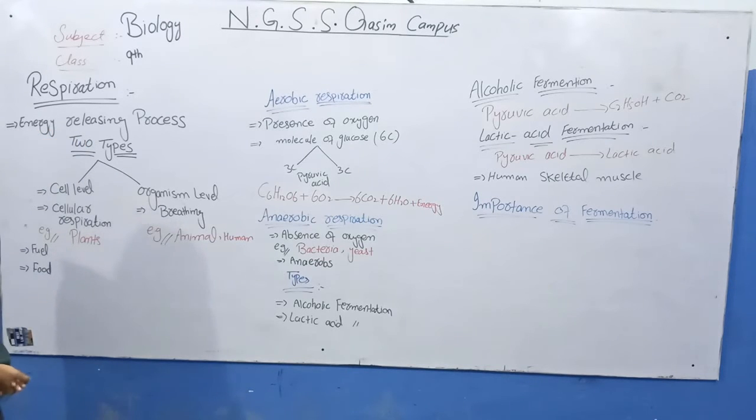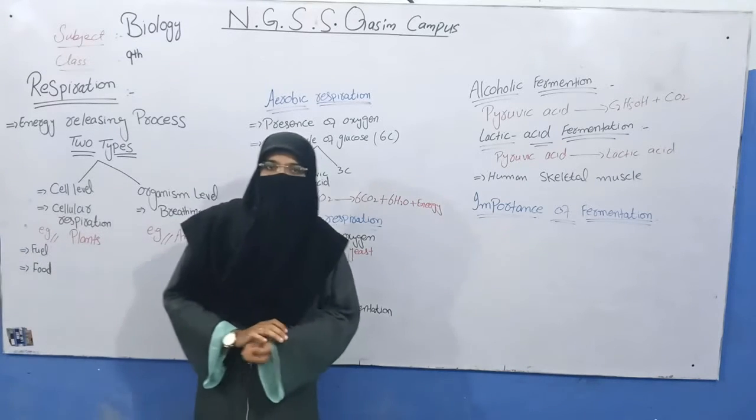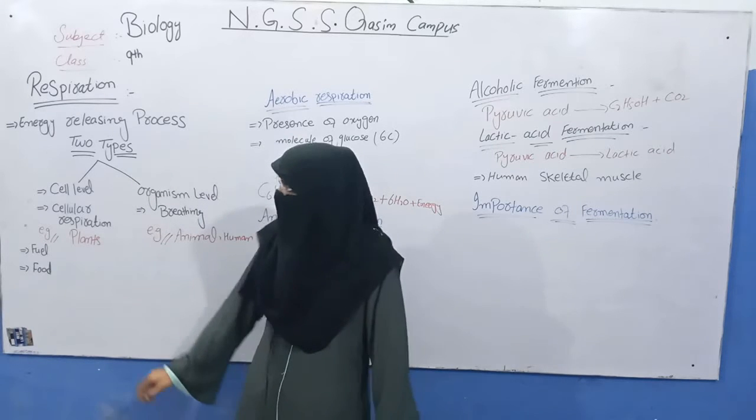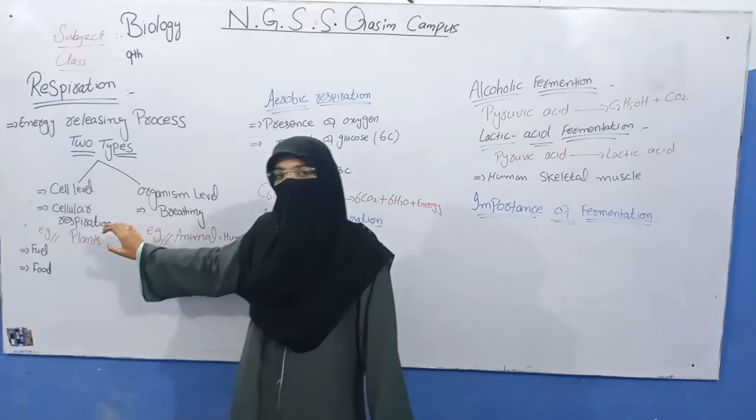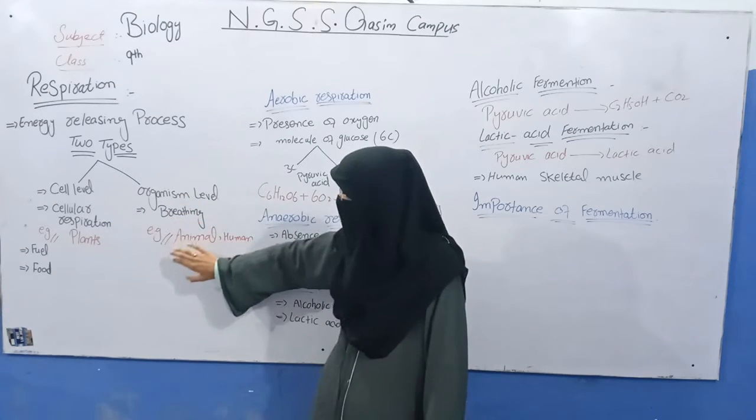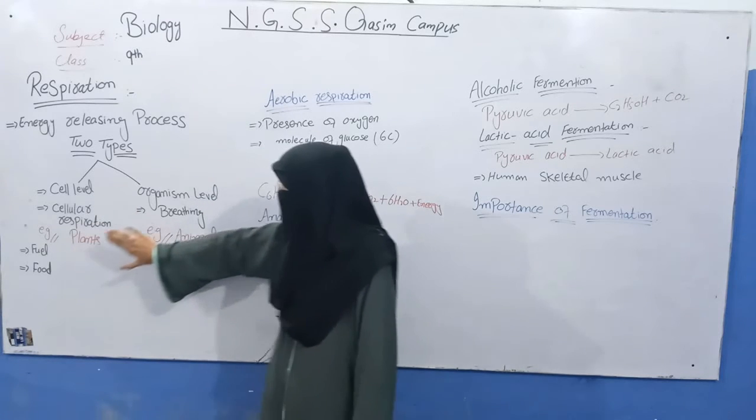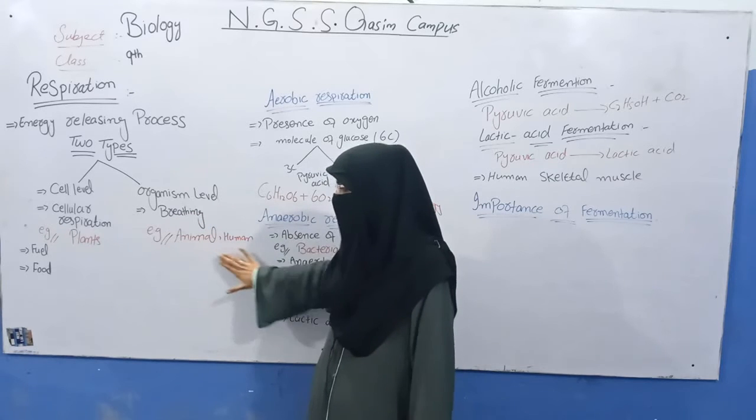There are two types of respiration. There is respiration at the cell level and respiration at the organism level. Cellular respiration occurs in plants, while organism level respiration is the breathing process in animals and humans.